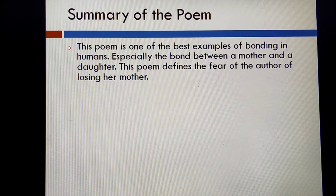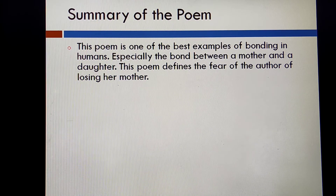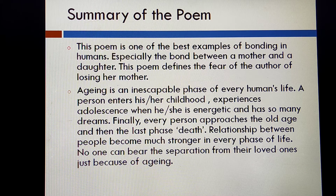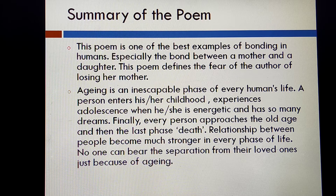Let's work on the summary together. This poem is one of the best examples of bonding in humans, especially the bond between a mother and a daughter. This poem defines the author's fear of losing her mother. Aging is an inescapable phase of every human's life — we cannot escape growing old. A person enters childhood, experiences adolescence with energy and many dreams, finally approaches old age, and then death. Relationships between people become much stronger in every phase of life, and no one can bear the separation from their loved ones just because of aging.